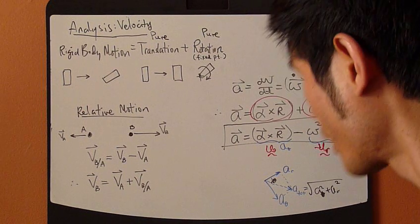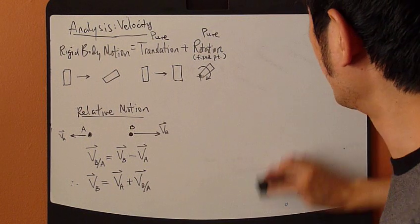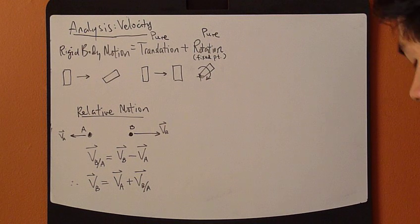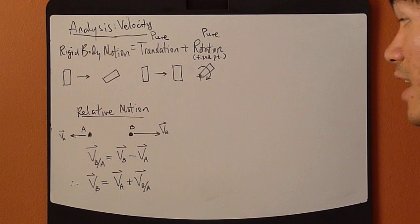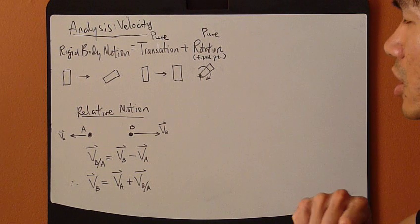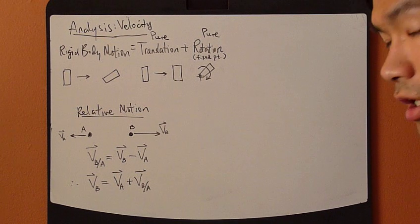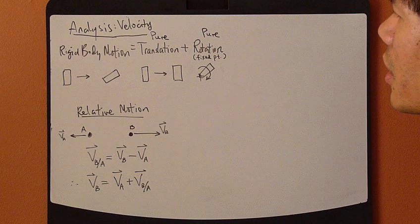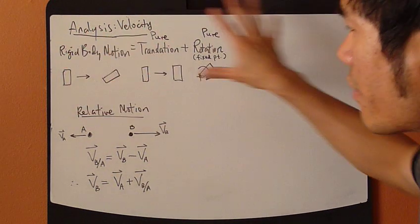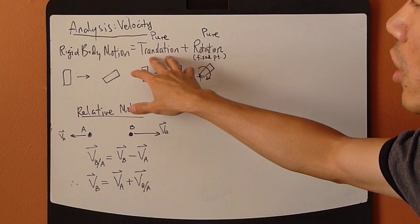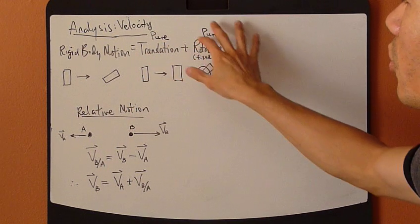Now that we have velocity and acceleration defined — particularly looking at angular acceleration and velocity and the relation between angular and linear — we can begin the analysis procedure for a rigid body. The big concept here is that for rigid body motion, you can split that into pure translation plus pure rotation.